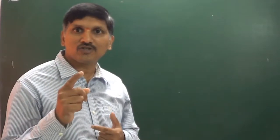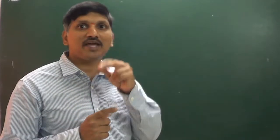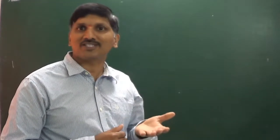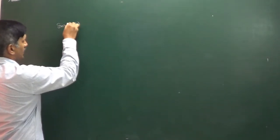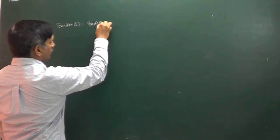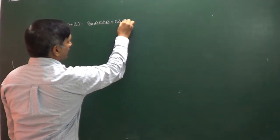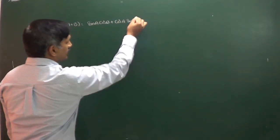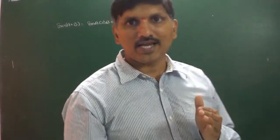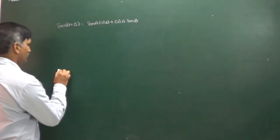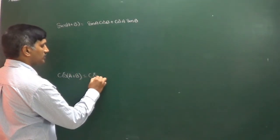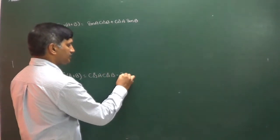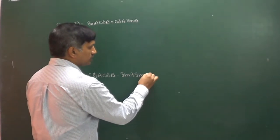As I told you, in the earlier class we discussed many formulas based on sin(A+B), sin(A-B), cos(A+B), and cos(A-B). Today's class we are also going to derive formulas based on those. You know the formula: sin(A+B) = sinA·cosB + cosA·sinB. Similarly, cos(A+B) = cosA·cosB - sinA·sinB.